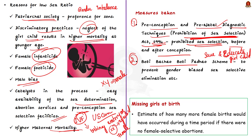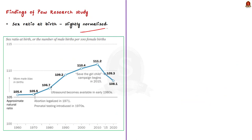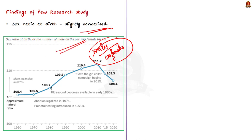Before going into the findings of the study, you need to know what 'missing girls at birth' means. Here 'missing' does not mean a lost child — it refers to an estimate of how many more female births would have occurred during a time period if there were no female selective abortions. This data provides us the status of the success of measures taken by the government. Now coming to the findings: the major finding is that sex ratio at birth has normalized slightly. The study calculated males per 100 females — note that previous data was females per 1000 males, so please do not get confused.